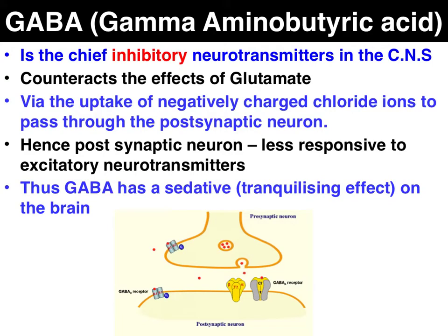GABA is the major inhibitory neurotransmitter in the central nervous system of vertebrate animals. It counteracts the effects of glutamate, which is the major excitatory neurotransmitter in the nervous system. Glutamate plays a key role in learning and memory, as well as alertness and arousal.